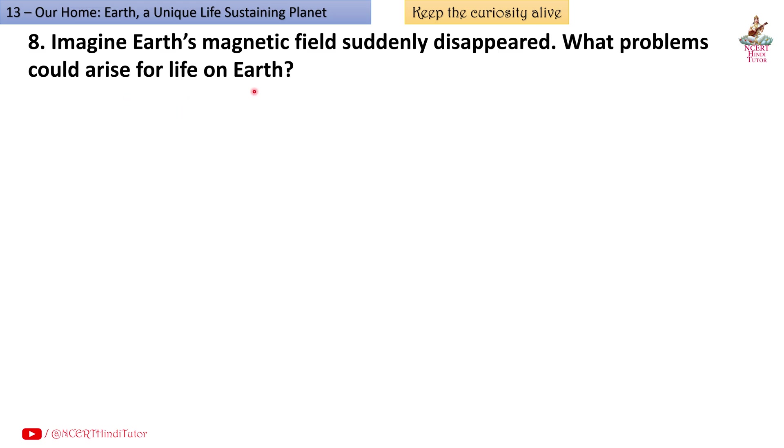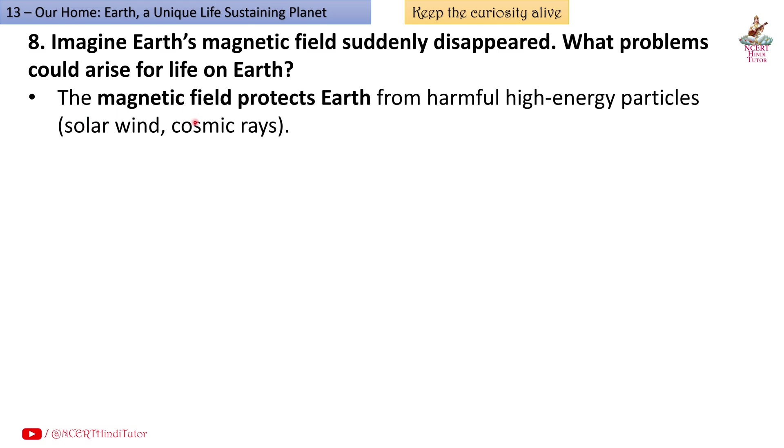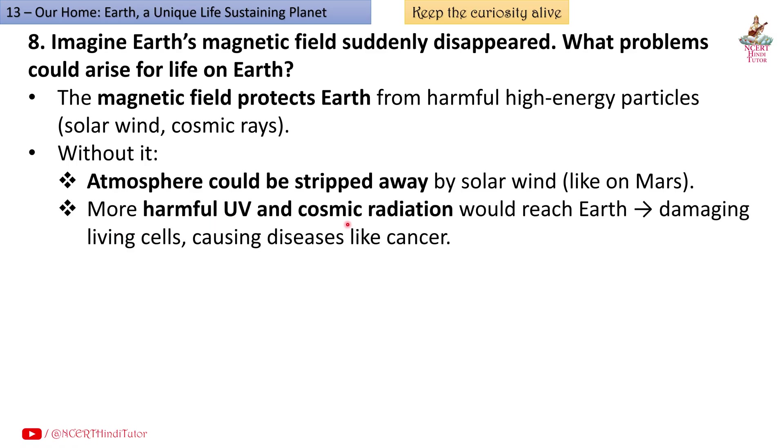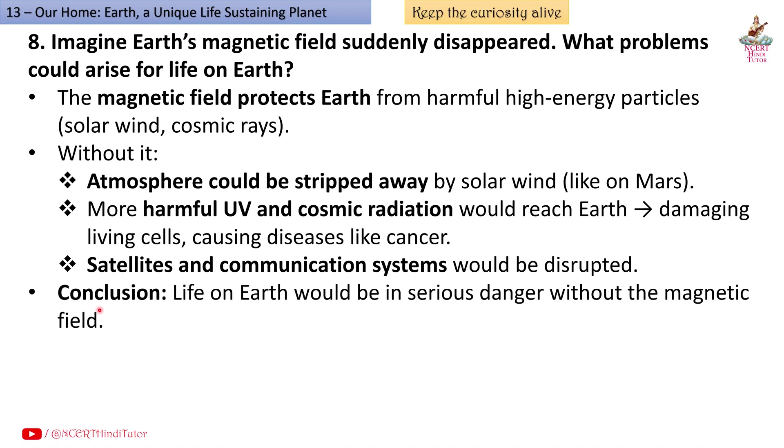Conclusion: Past climate changes were natural and slow, but today's global warming is human driven and dangerous for ecosystems and humans. Question 8: Imagine earth's magnetic field suddenly disappeared. What problems could arise for life on earth? Answer: The magnetic field protects earth from harmful high energy particles, solar wind, cosmic rays. Without it, atmosphere could be stripped away by solar wind like on Mars, more harmful UV and cosmic radiation would reach earth, damaging living cells and causing diseases like cancer, satellites and communication systems would be disrupted. Conclusion: Life on earth would be in serious danger without the magnetic field.